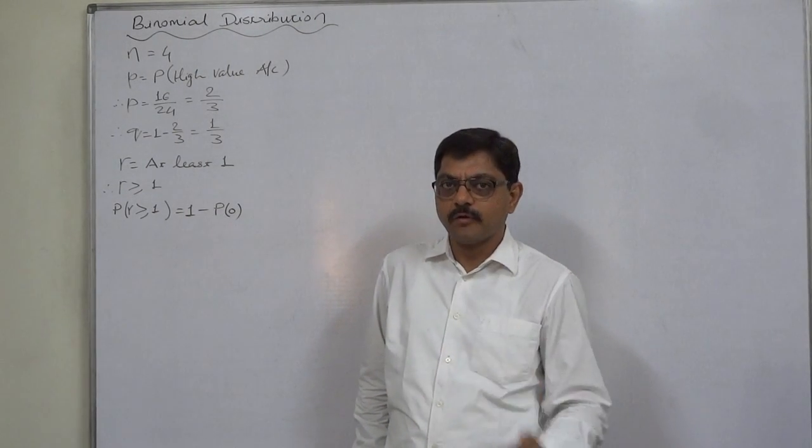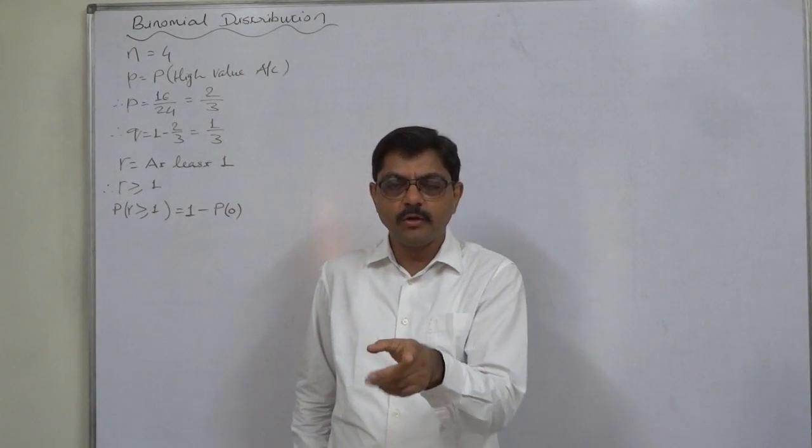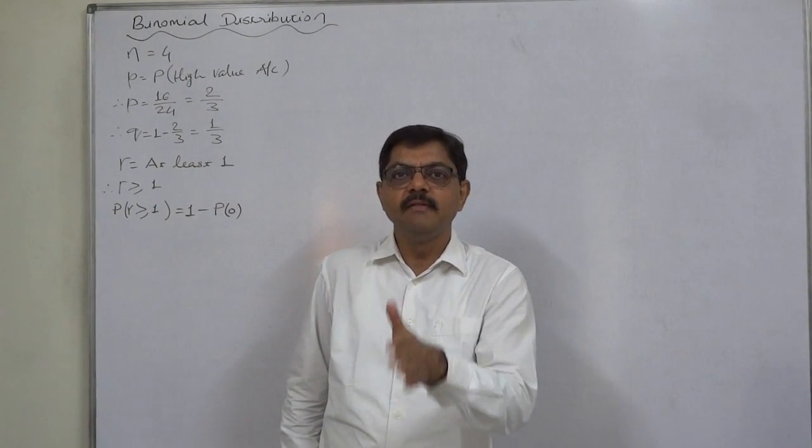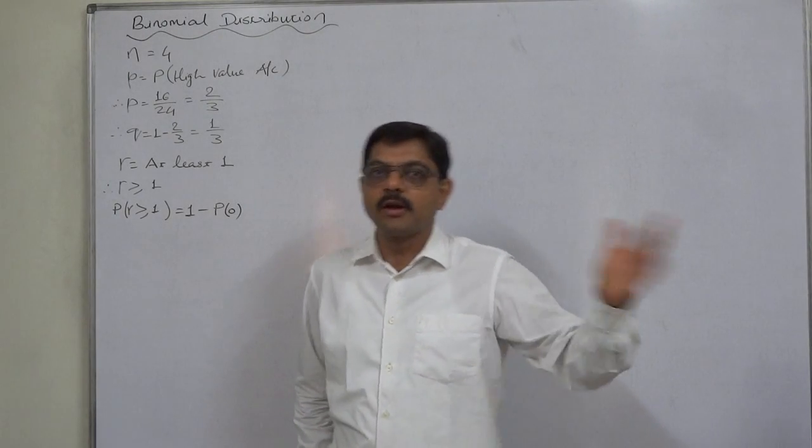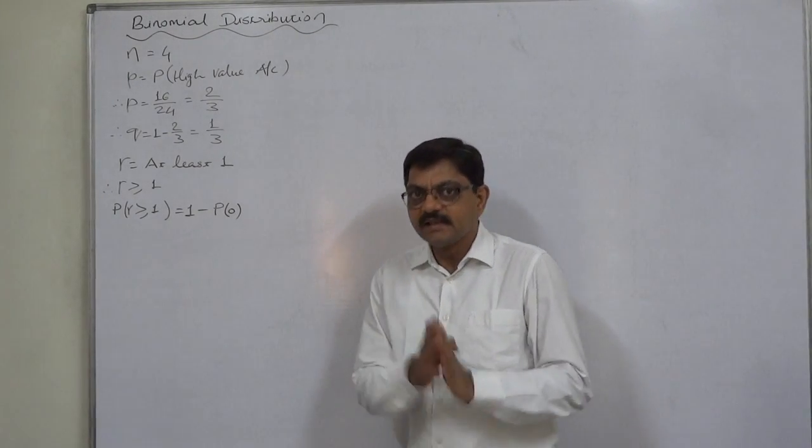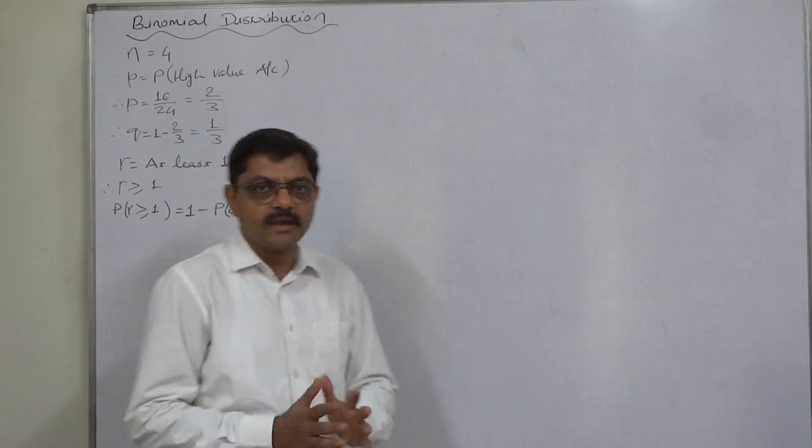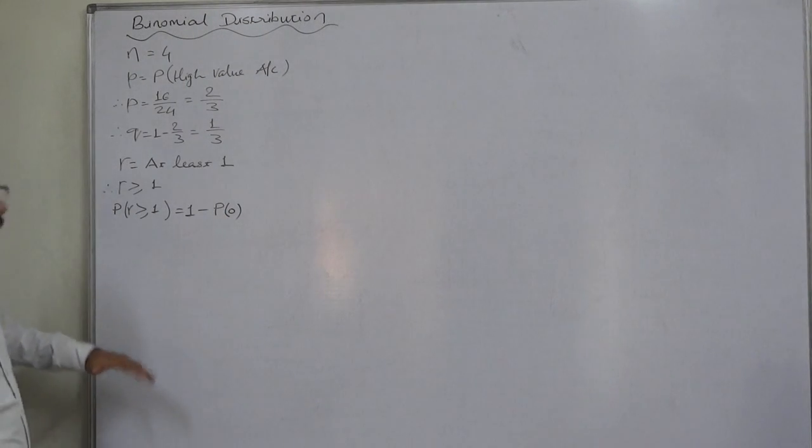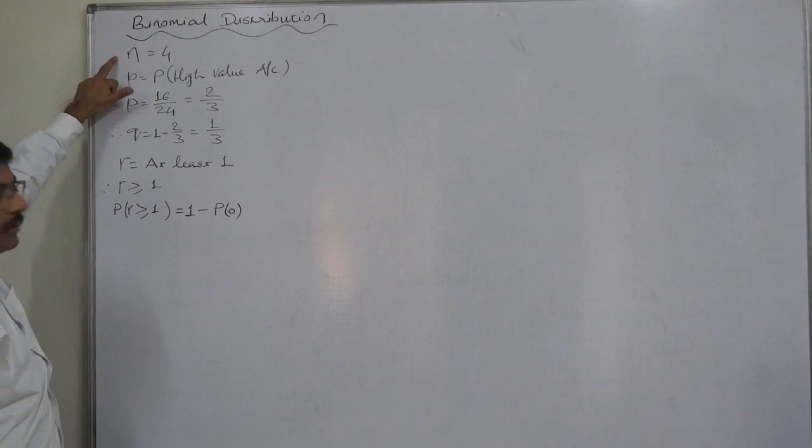Small n is 4 because we need to calculate the probability of at least one highly valued account out of 4 and not out of 24. So this is the thing we all have to keep in our mind at the time of solving the problem. So n is 4 and not 24.